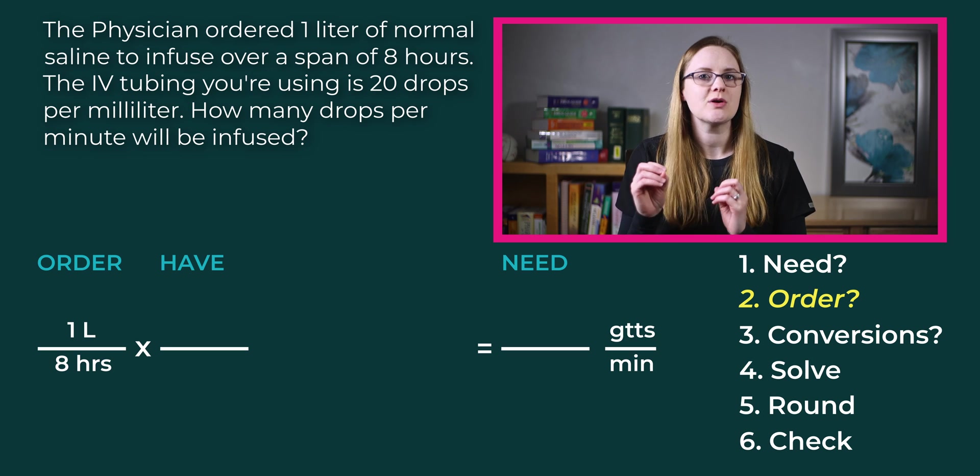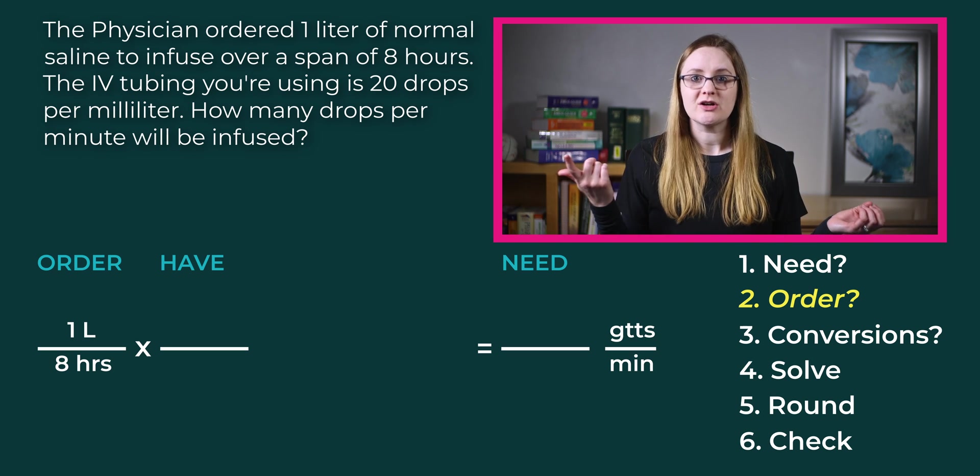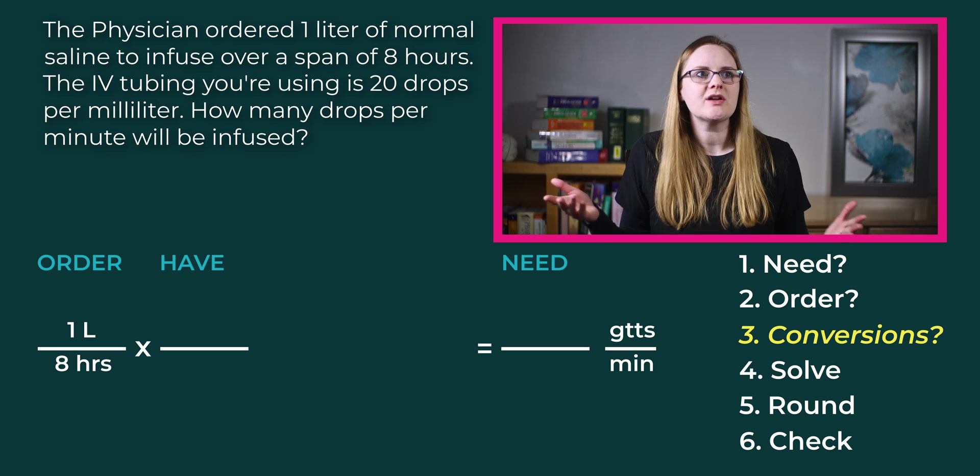So now we need drops over minutes, but we currently only have liters over hours. Somehow we need to get from liters over hours to drops over minutes — this is where your conversion factors come in. This is step number three: what conversions do you need to use to solve this problem? This is where most nursing students get stuck. When you need to go from liters over hours to drops over minutes, you might freeze and think you have no idea how to do this. I completely understand — I am really not a math person, and that is why I love this six-step process.